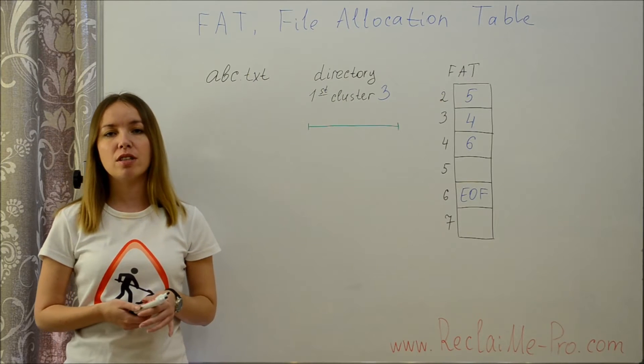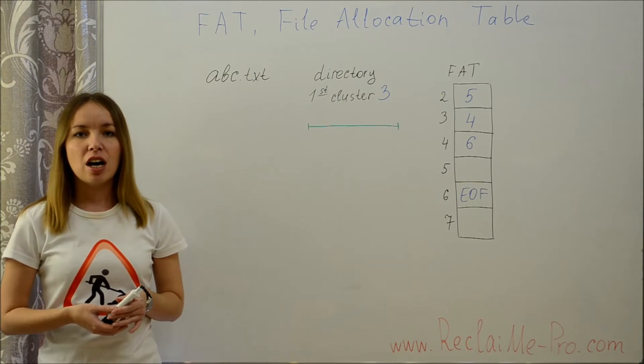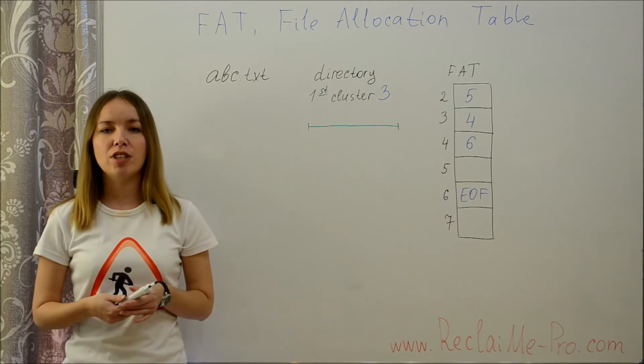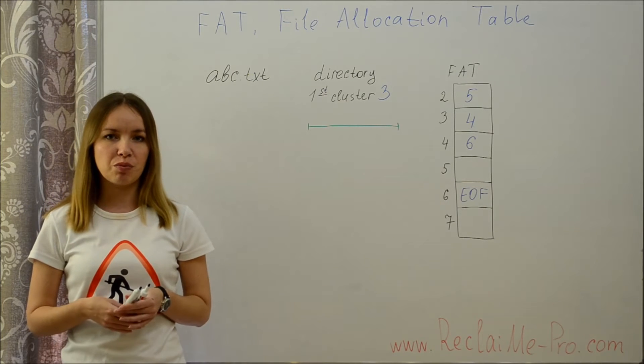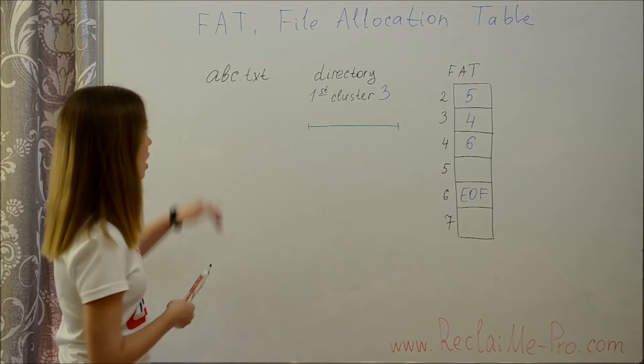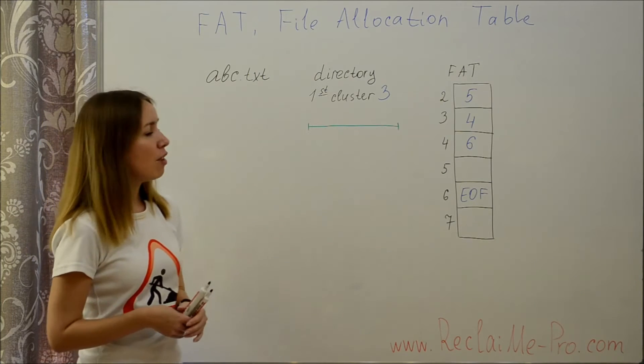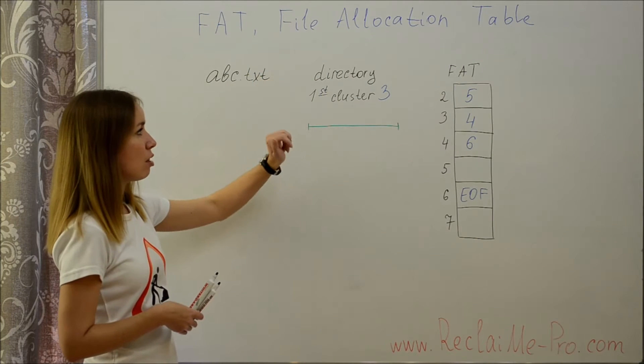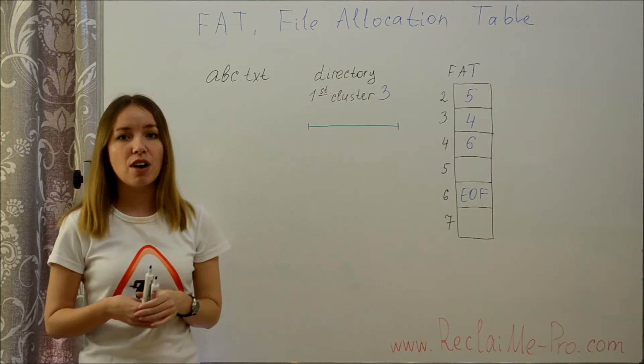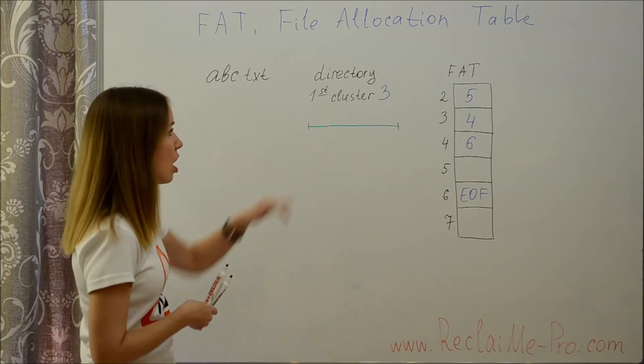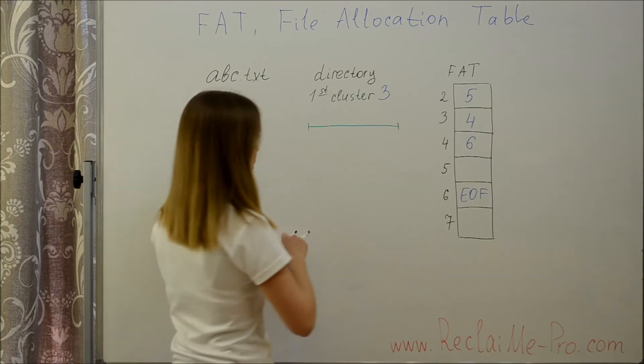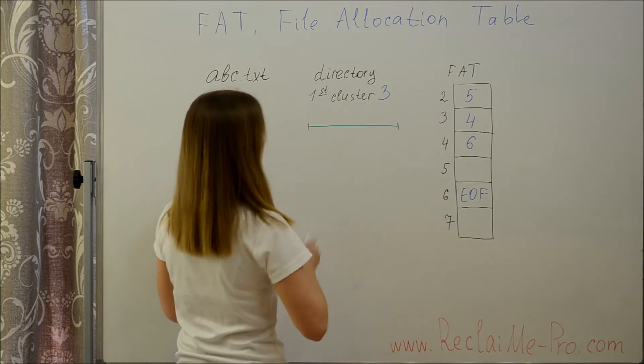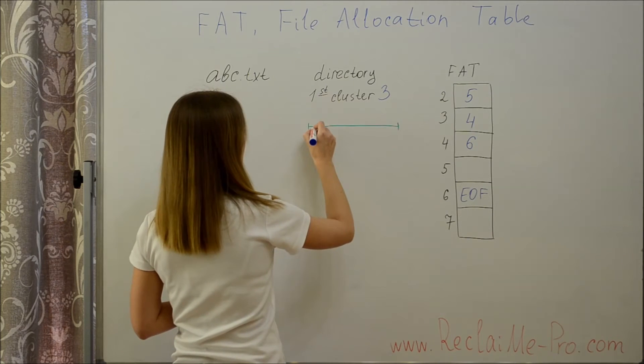Let's look more closely at read operation on FAT file system. Imagine that we need to read text file ABC. First a file system goes to a directory and knows that the beginning of the file is stored in cluster 3. A file system reads cluster 3.